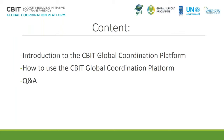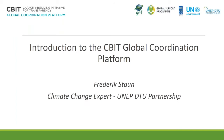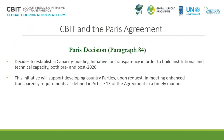The Q&A session is the most important part of this webinar, so please feel free to ask questions and use the function where you write your question throughout the webinar. The first presentation is a short introduction to the CBIT global coordination platform. The bigger context is that the CBIT was established with the Paris Agreement. Paragraph 84 in the Paris Agreement decided to establish a capacity building initiative for transparency in order to build institutional and technical capacity both pre and post 2020, to support developing countries in meeting enhanced transparency requirements as defined in Article 13 of the Paris Agreement.